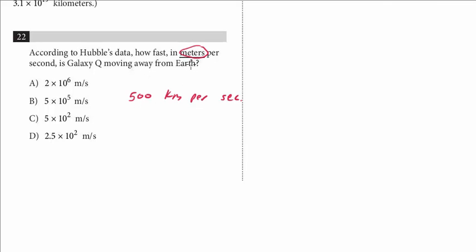Hopefully, you know that there's 1,000 meters in a kilometer, so we're going to have to multiply this times 1,000, and so we're just going to add three more zeros to this, because we have to multiply it by 1,000, and we have 500,000. Now, we don't see 500,000 as a choice, but they use scientific notation.